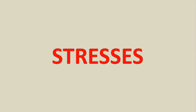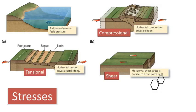Why does rock deform? Rocks deform because a stress is acting on them. Stresses are forces that push, pull, or tear a body of rock. Earth scientists recognize three types of stresses: compressional stress, tensional stress, and shear stress.